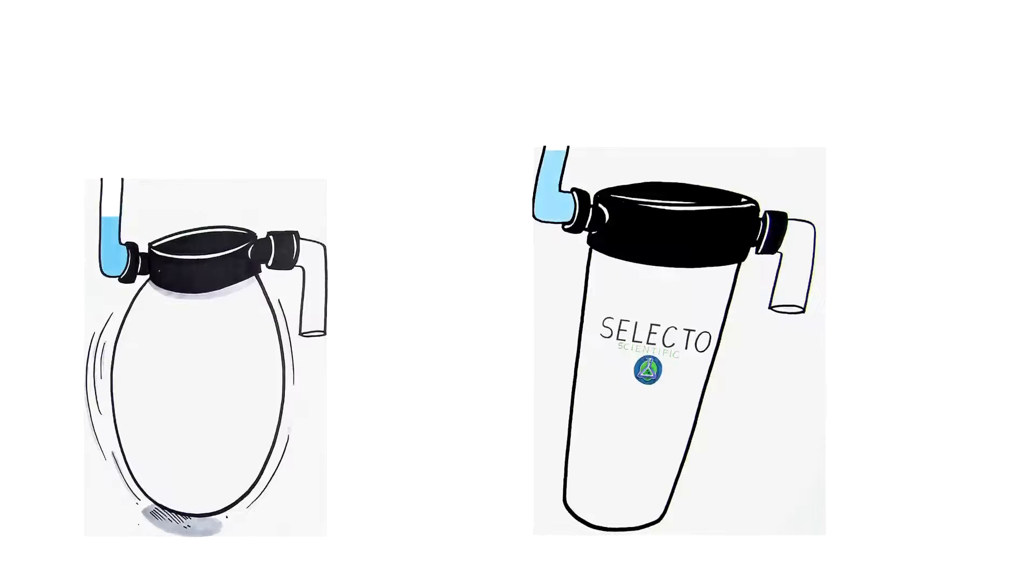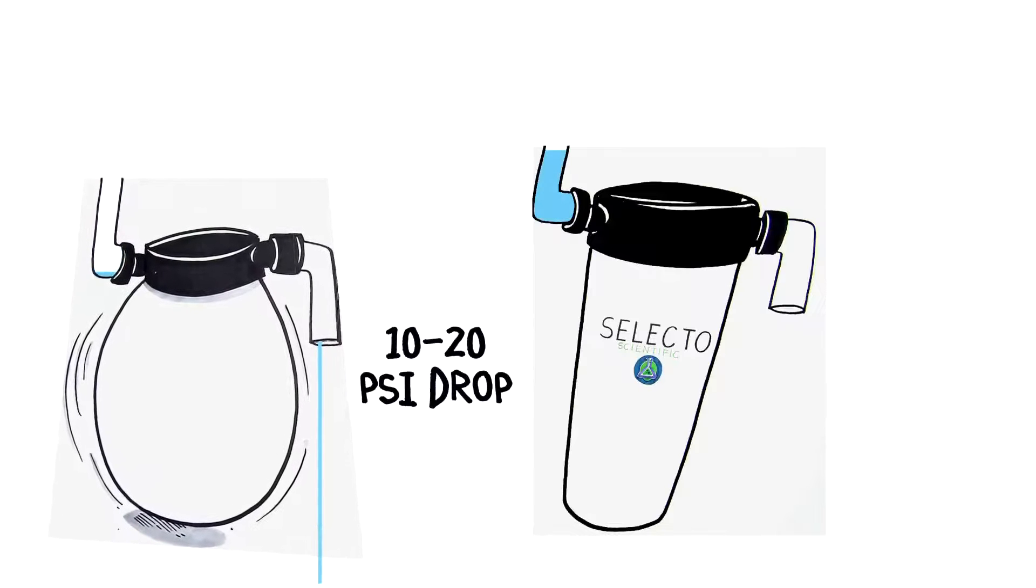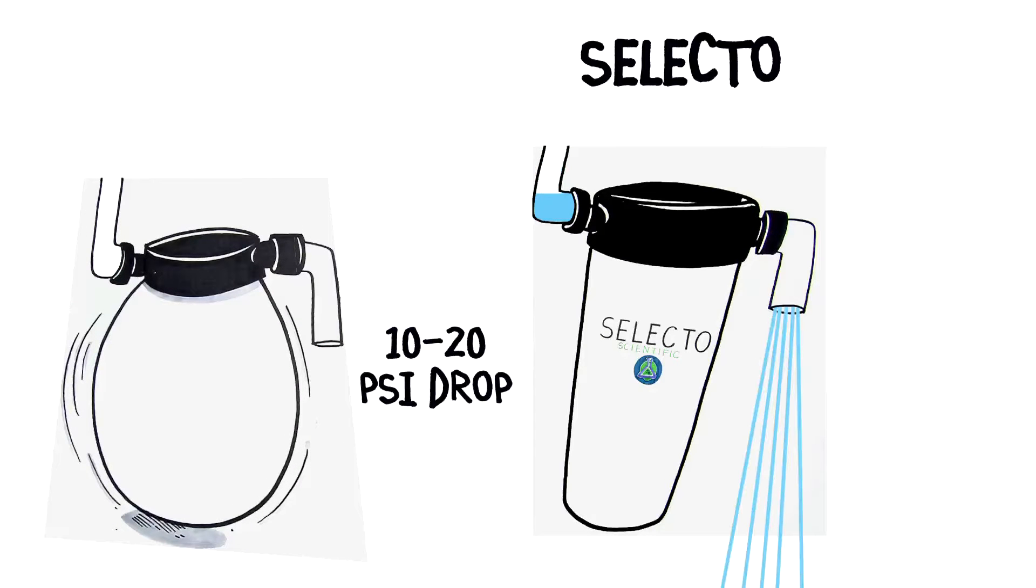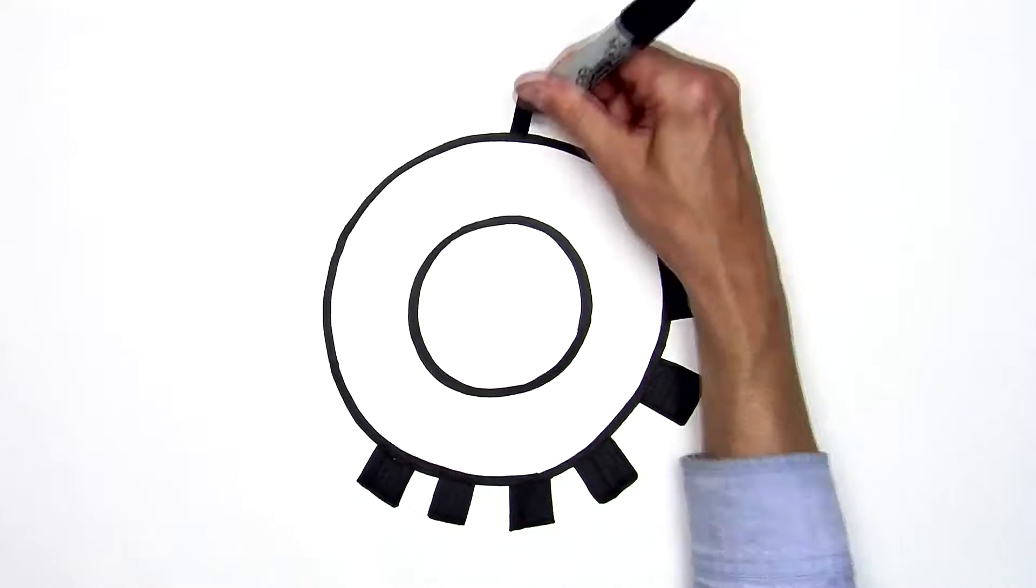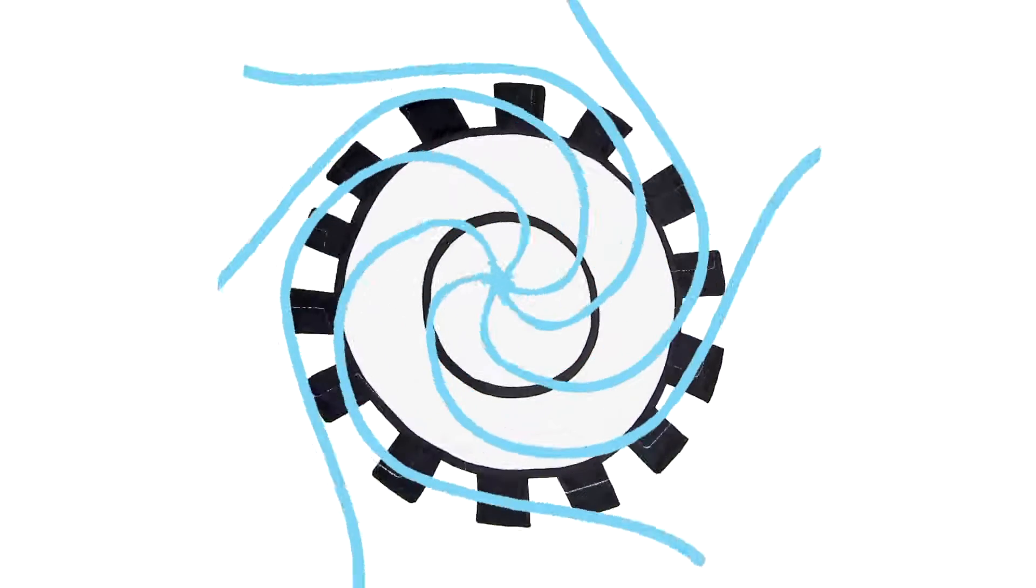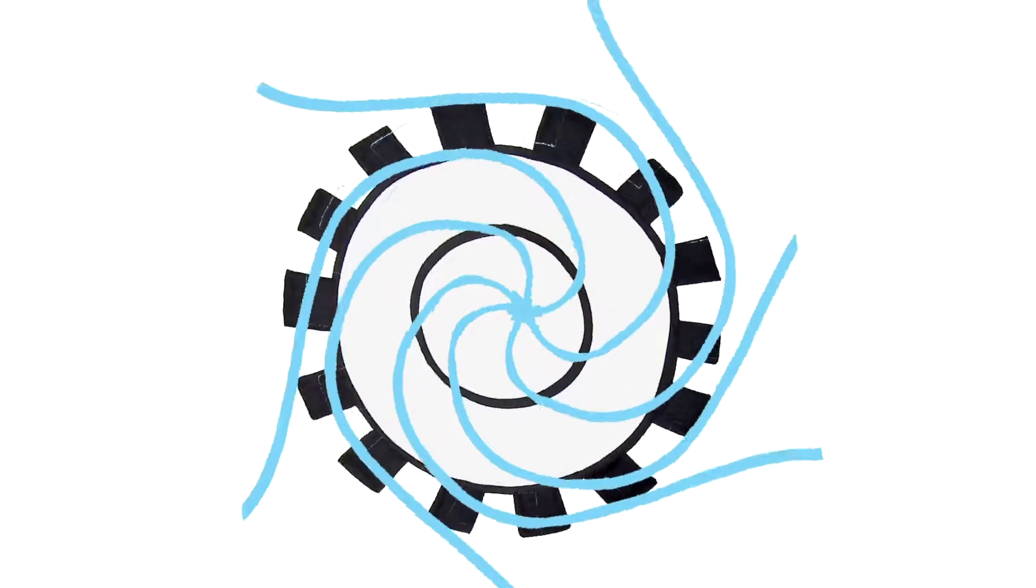Now, most filters create a 10 to 20 PSI pressure drop. Not Selecto's. Ours is under 2 PSI. Lower pressure drop means more water when you need it. Selecto's TurboFlow technology goes a step farther, spinning water to maximize contact time and reduce plugging.